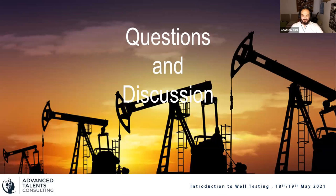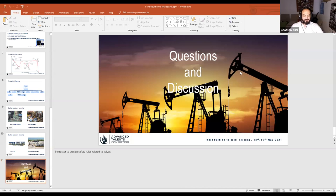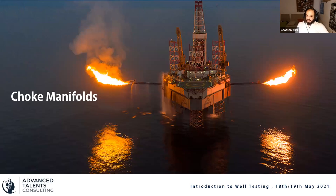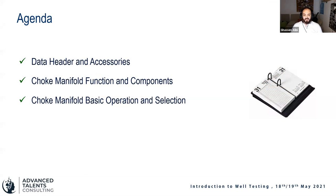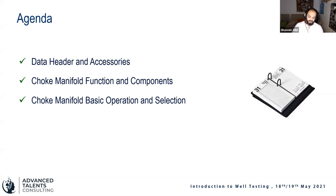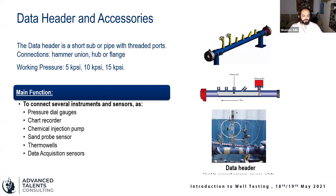POOH means pull out of hole — used when talking about coil tubing, for example. Now we'll move to the next presentation covering the second piece of equipment going back from the wellhead: the choke manifold and data header. We'll talk about its function, components, basic operation, and selection criteria.